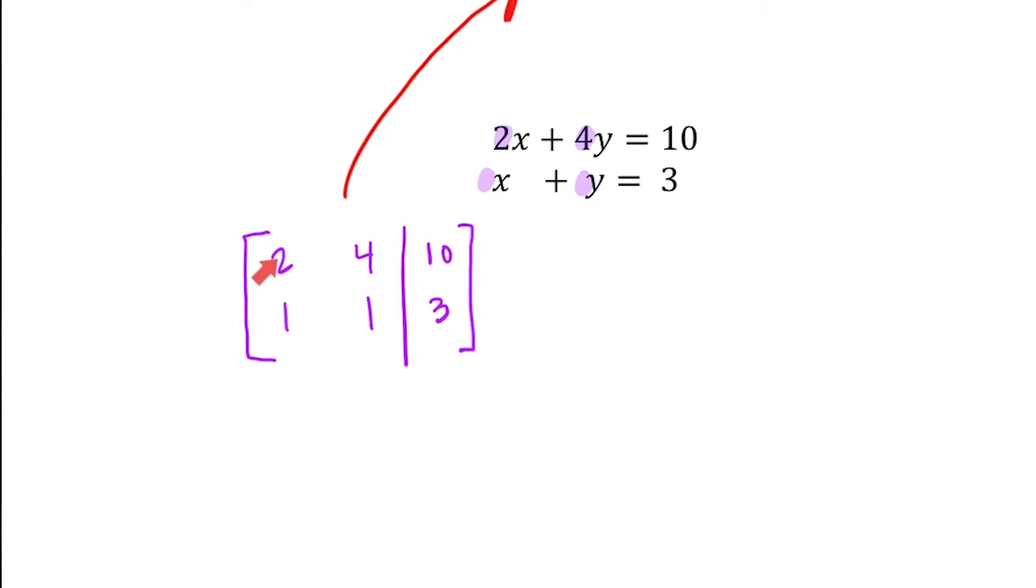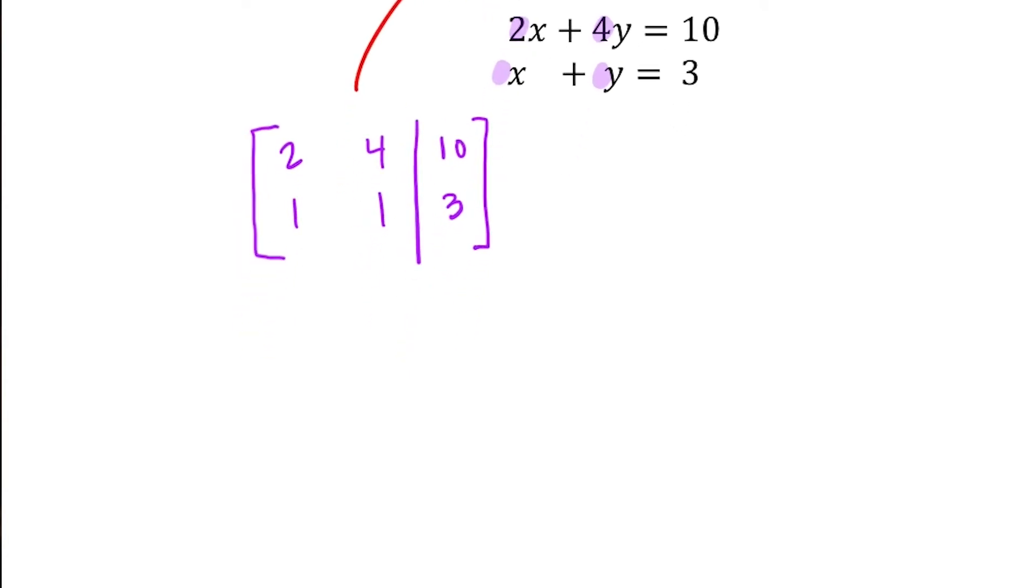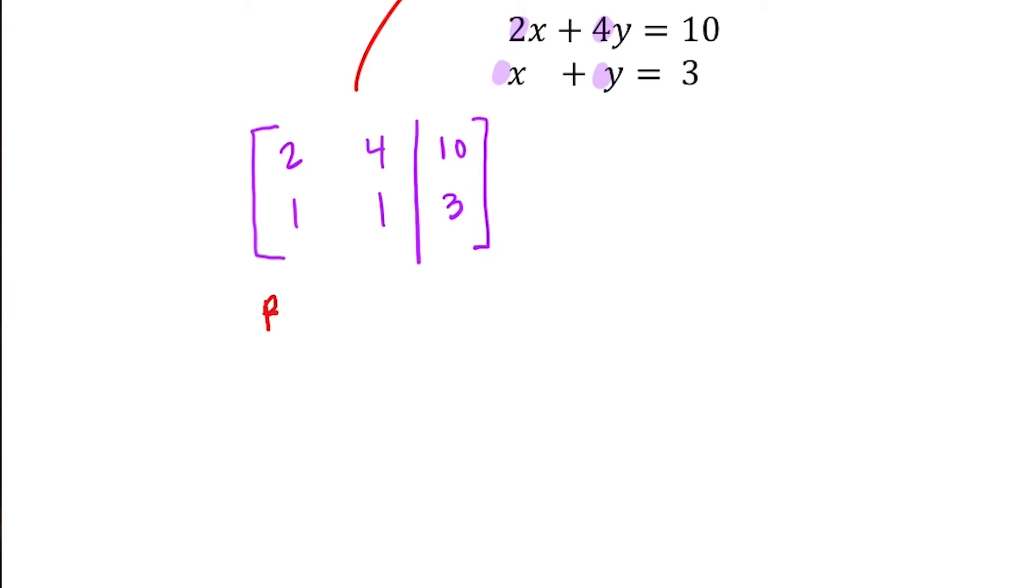However, if we did 2 minus 1, we could get a 1 right here. So what if I did row 1 minus row 2, and I use that to change the first row? So that means I am not changing the second row of this matrix. I'm only changing the first row. So 2 minus 1 is 1, 4 minus 1 is 3, and 10 minus 3 is 7.